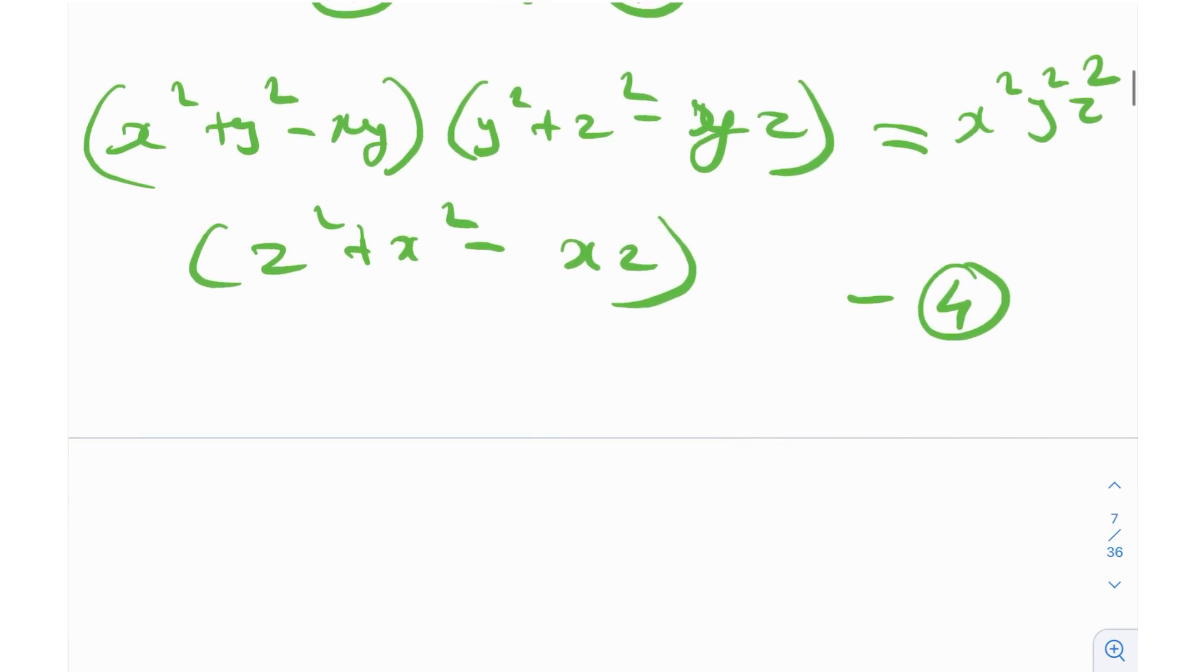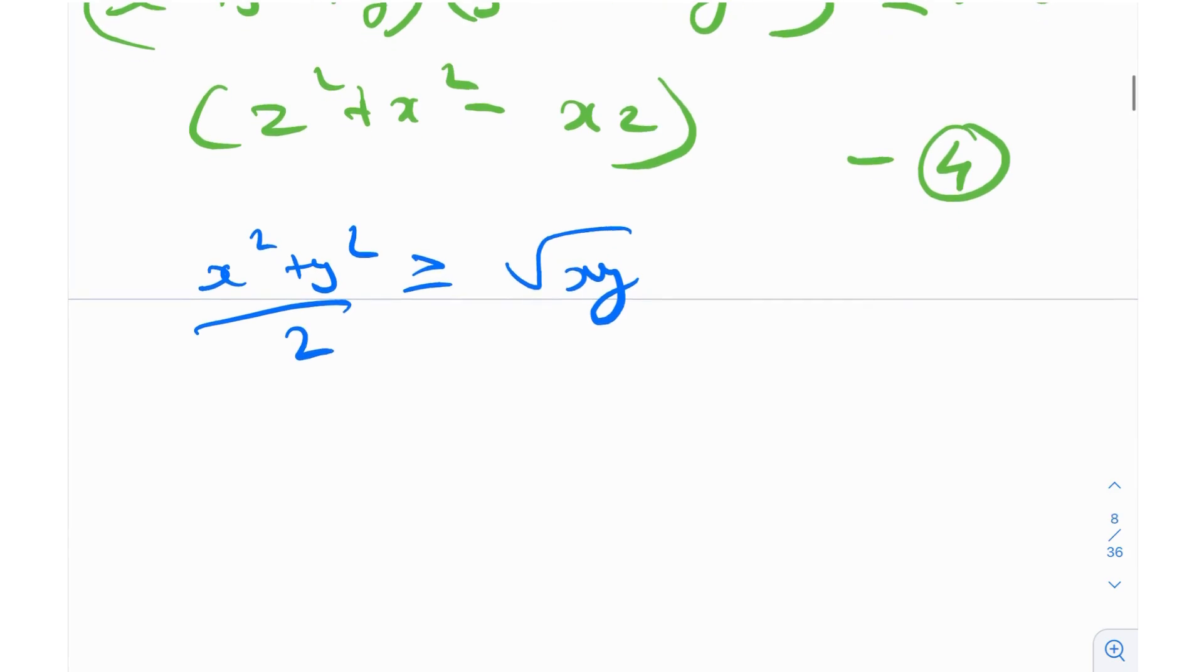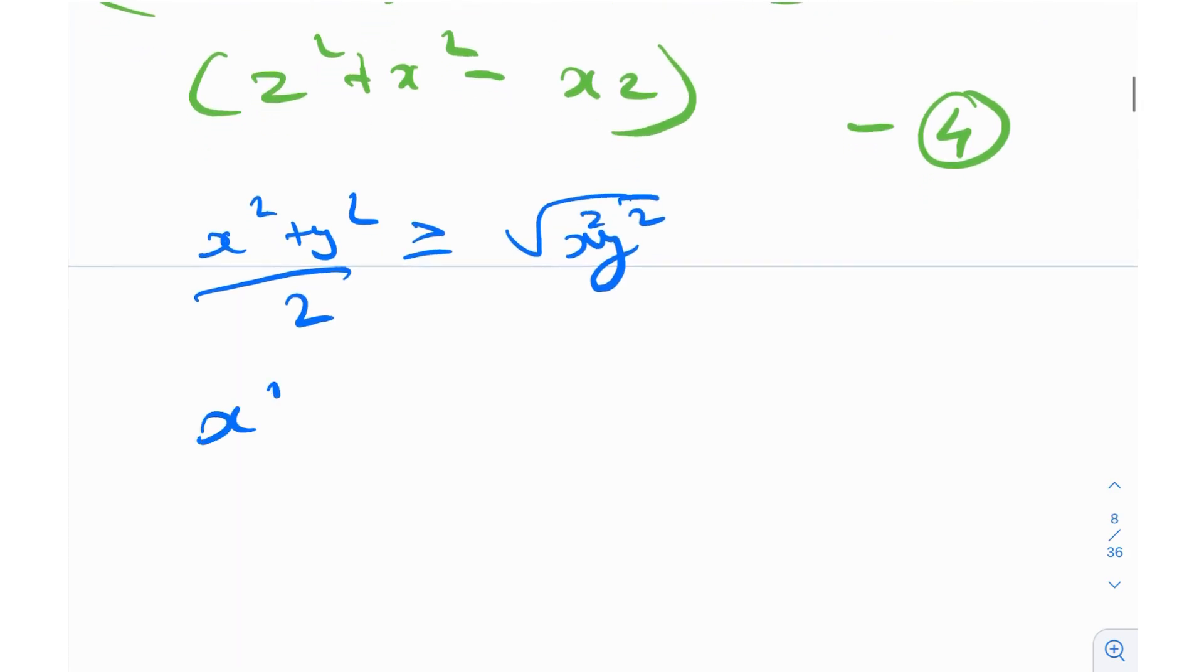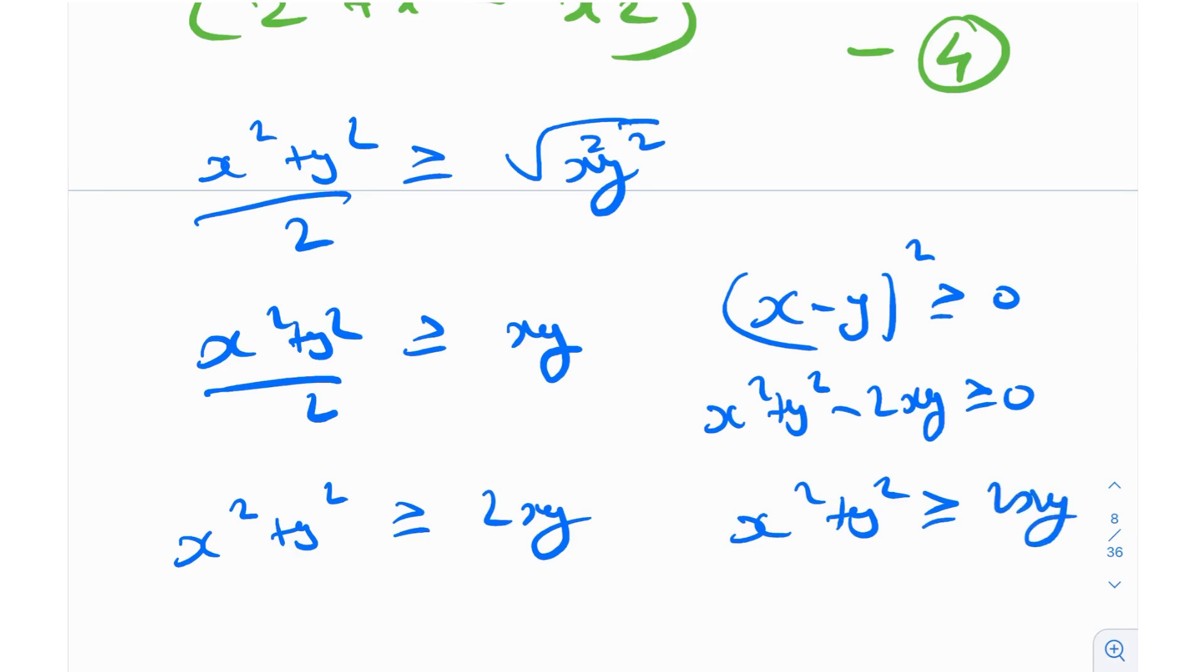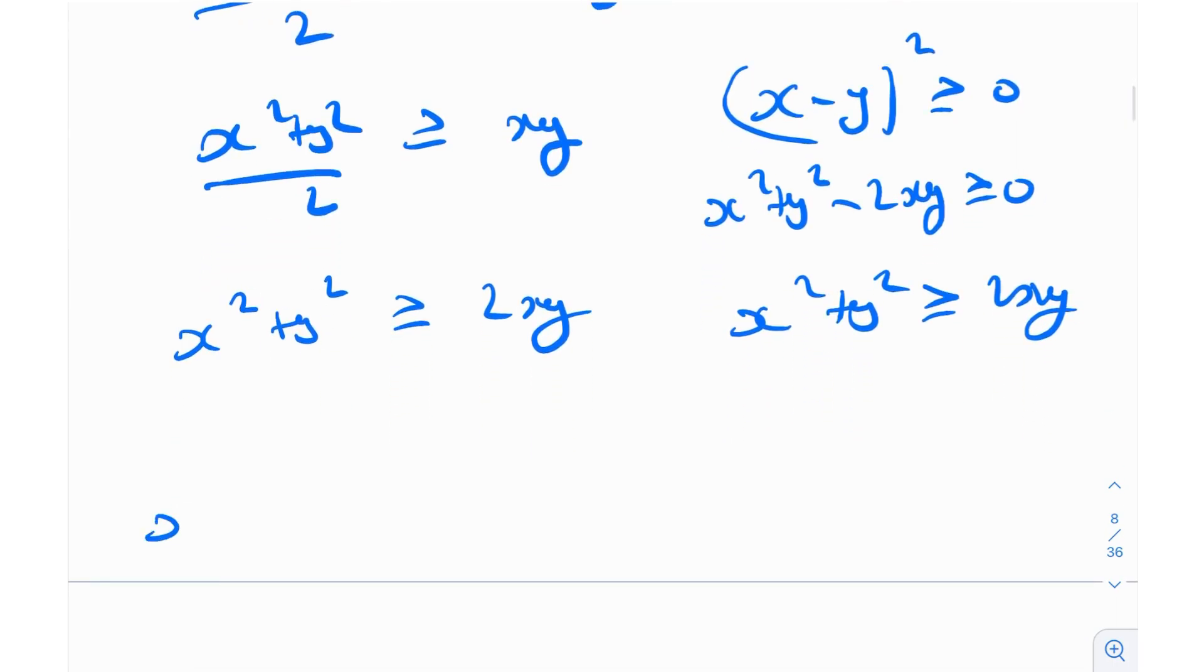Because if you just notice, if I just maybe try to apply AM-GM for two numbers x squared and y squared, it looks something like this. So this just becomes x squared plus y squared by 2 is greater than or equal to xy. In other words, x squared plus y squared is greater than or equal to 2xy. This can be very easily seen like this as well. x minus y whole squared is greater than or equal to 0. A squared quantity is always greater than or equal to 0. And when you just open this, you'll simply get x squared plus y squared minus 2xy greater than or equal to 0. In other words, x squared plus y squared greater than or equal to 2xy. Simple stuff. So what does that mean? That means that x squared plus y squared minus xy is greater than or equal to xy.